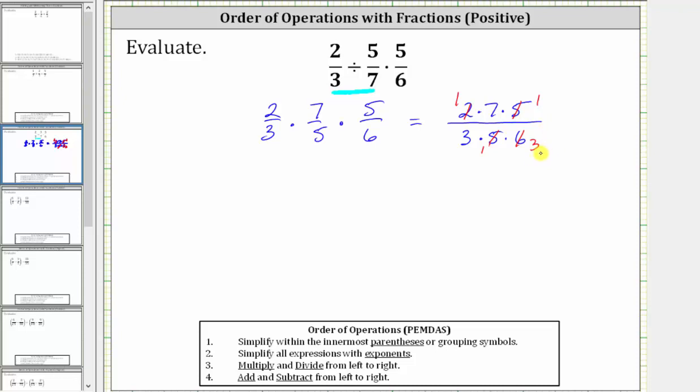Now the only common factor between the numerator and denominator is one, so now we can multiply and know the fraction will be in simplified form. In the numerator, we have one times seven times one, which is seven. In the denominator, we have three times one times three, which is nine.